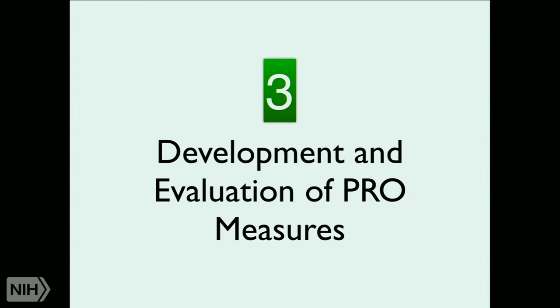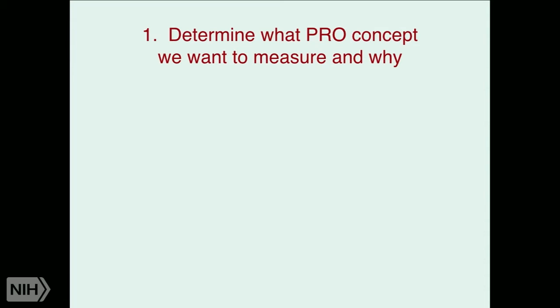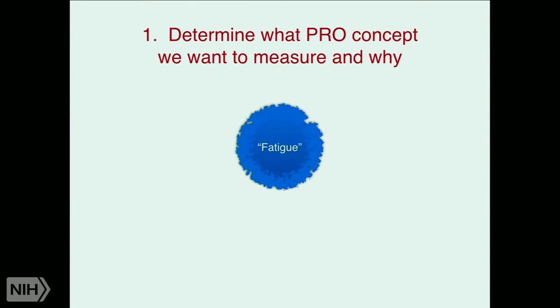Let's go through a quick review of developing and evaluating PRO measures. I don't want to spend too long on this, but I want to give you an appreciation of the overall shape of how this goes. The first thing we're going to do is determine what PRO concept we want to measure and why. Let's take the example of fatigue. A bunch of investigators sitting around think we need a better fatigue measure. We've got a rough notion of what we mean by fatigue and where the boundaries of that concept might be — but it's still kind of muddy.